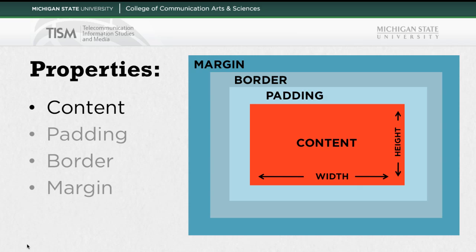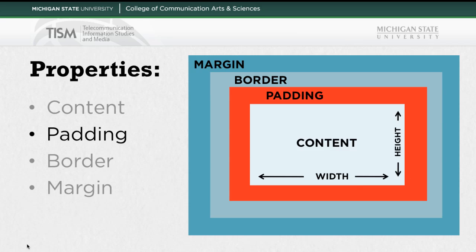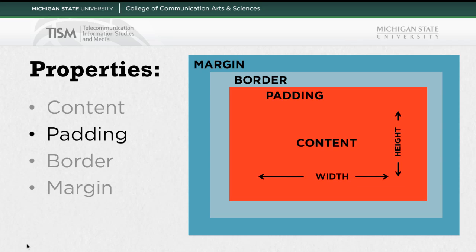So let's start with content. That's basically where all of the text or images or what have you is going to be inside of your element. Then we have padding, which is the space between the content and stuff that you have in there like text or images. Together these work to form the basis for your box.